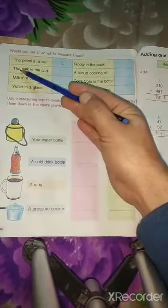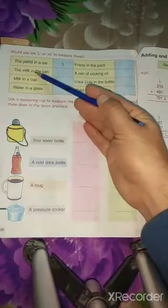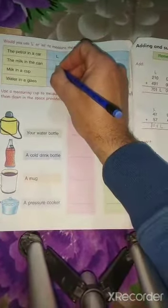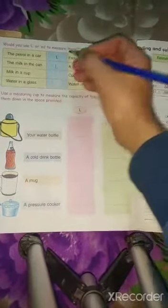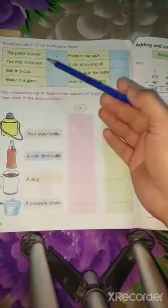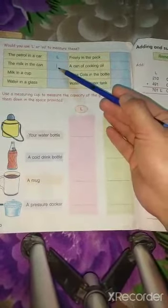Then next one is the milk in the can - in liter. Okay, so here is the milk in the can in liter.